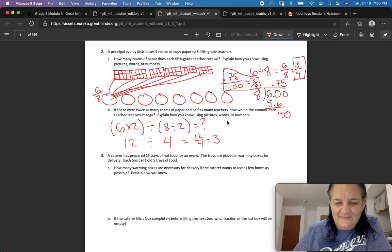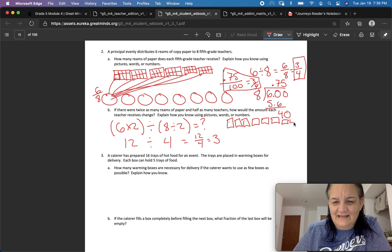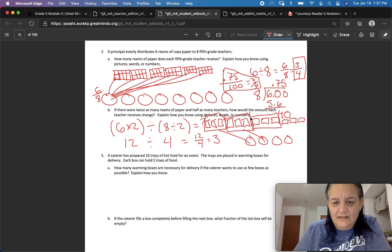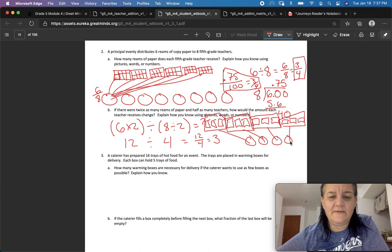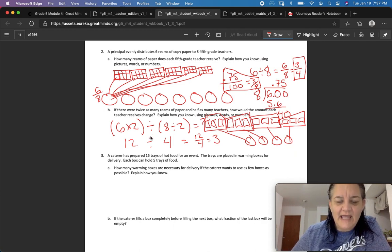So one, two, three, four, five, six, seven, eight, nine, ten, eleven, twelve reams, and now we only have four teachers. Three, four, so we're going to, these three are going to this person, these three are going to that person, these three are going to this person, and these three go to that person. So here we did it with pictures and numbers.